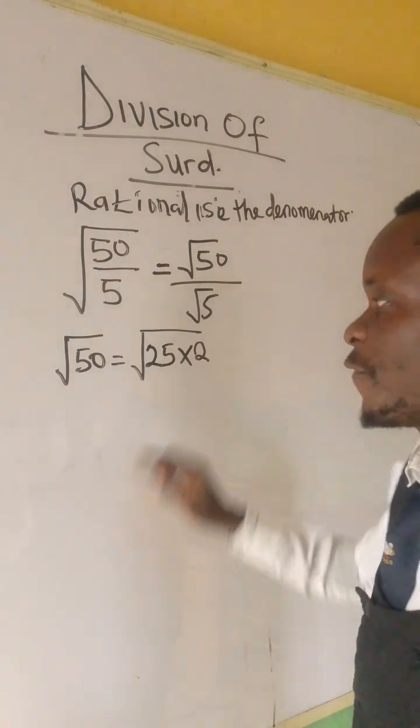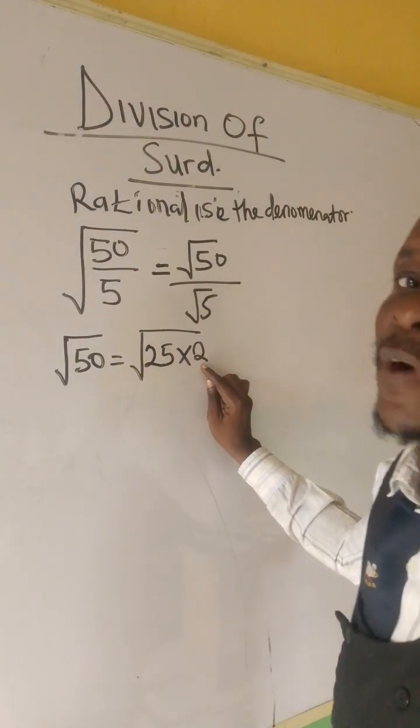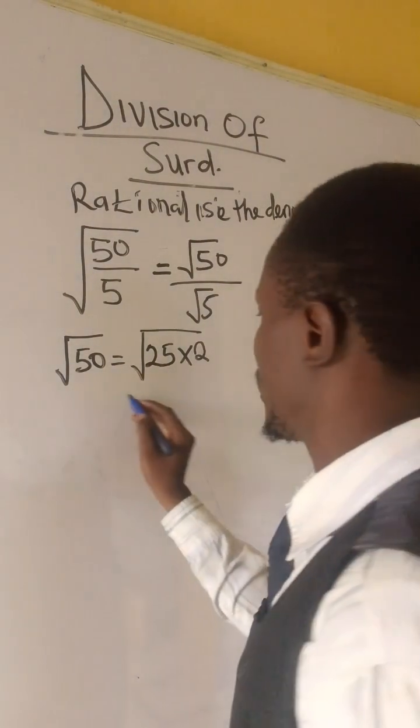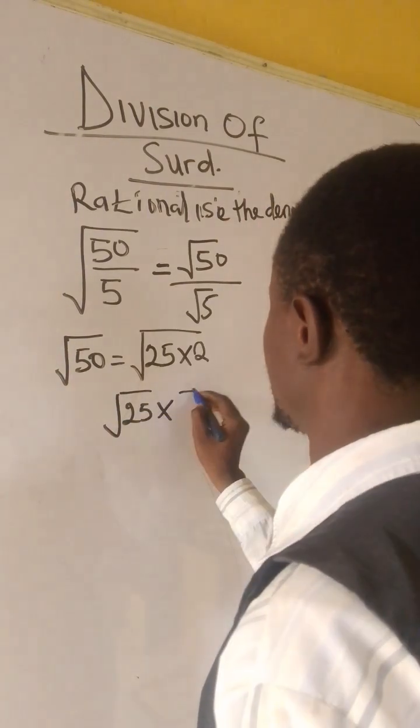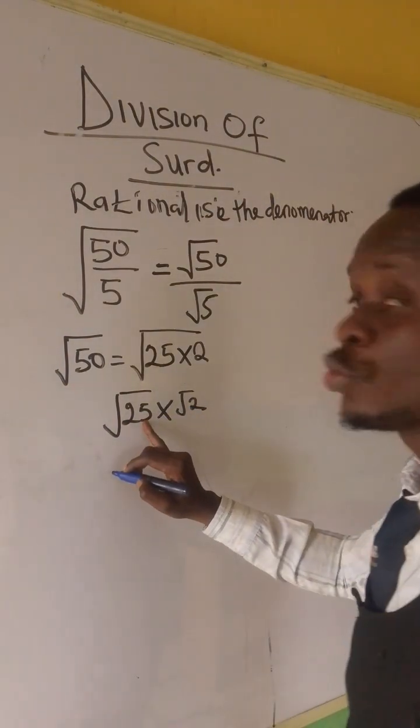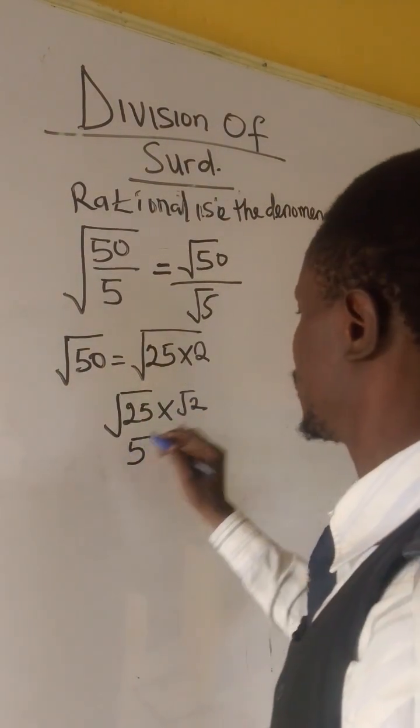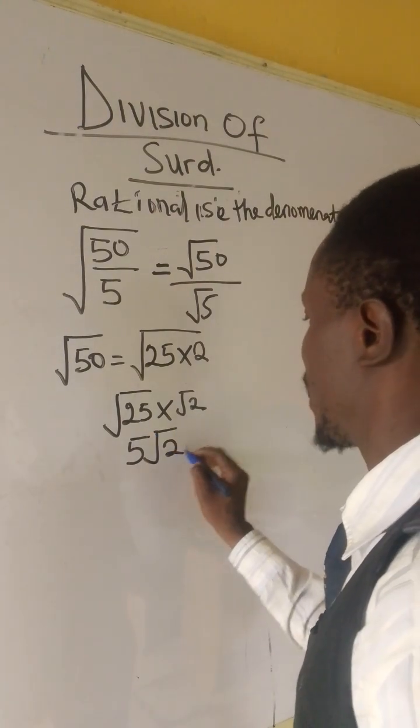Remember, we need a perfect square and one imperfect square. And from here we have root 25 times root 2. Now, the root of 25 will give us 5 times root 2 will give us 5 root 2.